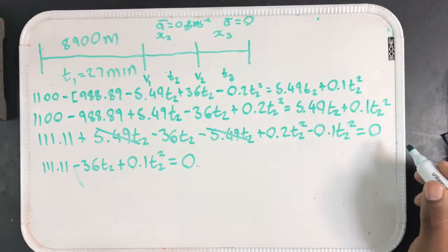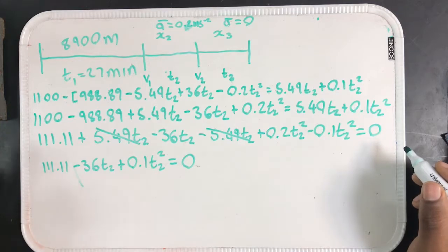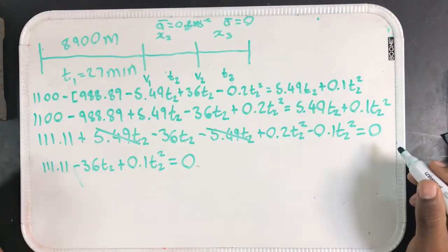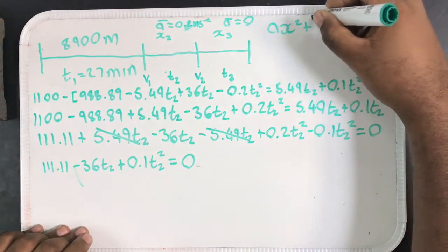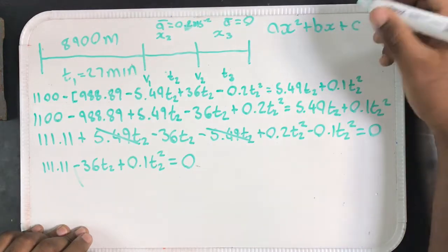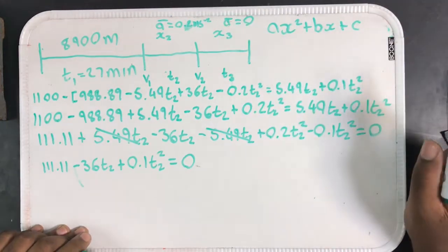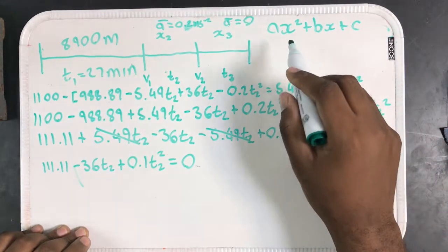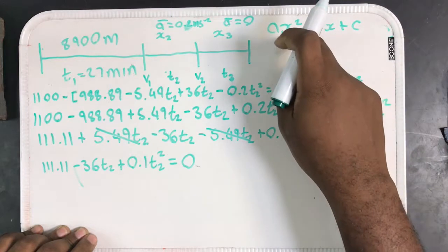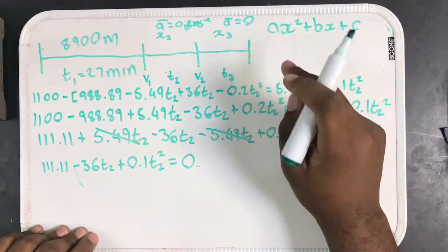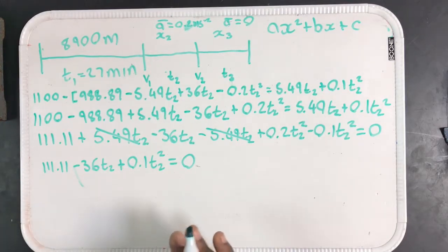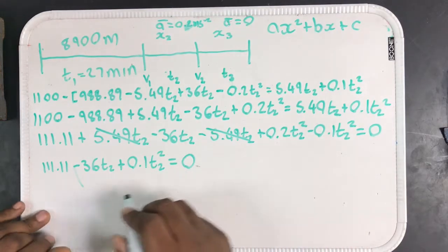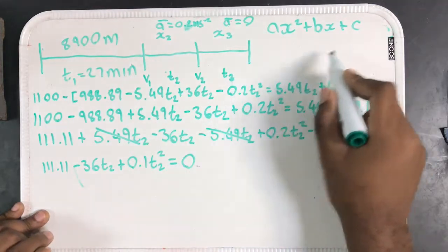If I really simplify this, I have 111 minus 36 T2 plus 0.1 T2 squared equals 0. From precalculus algebra, or even basic college math, or even high school math, this resembles a quadratic equation, because a quadratic equation is of the form AX squared plus BX plus C. Similarly here, T2 is just our independent variable. It's only a placeholder for a value that we don't know, or an unknown.